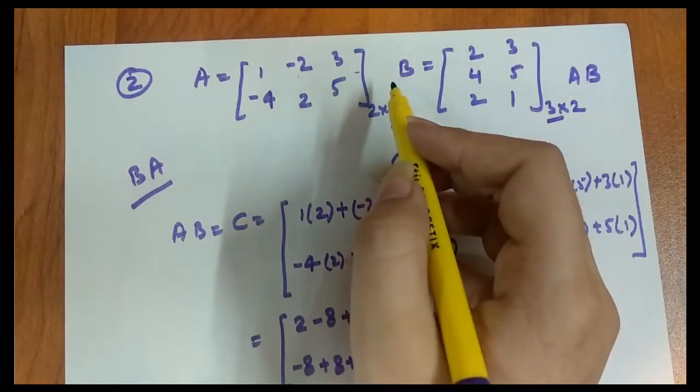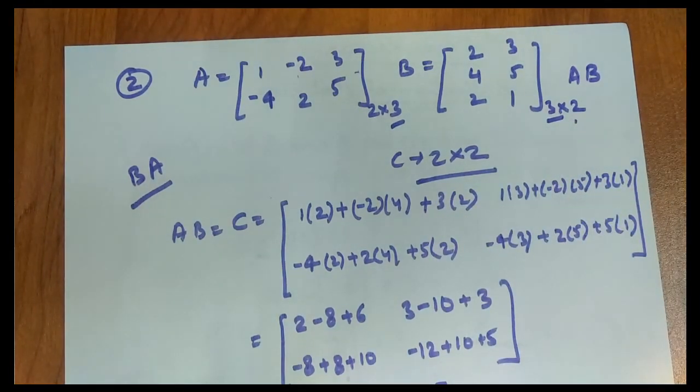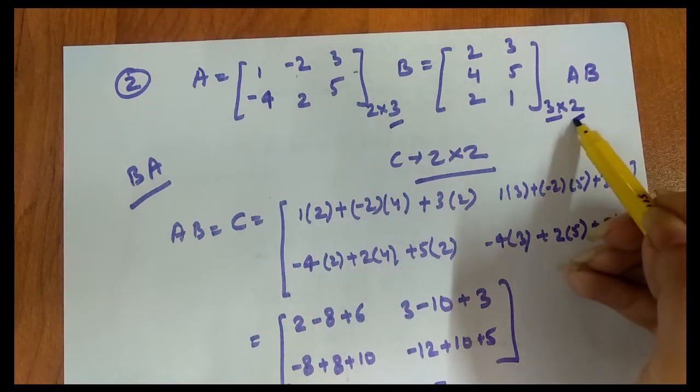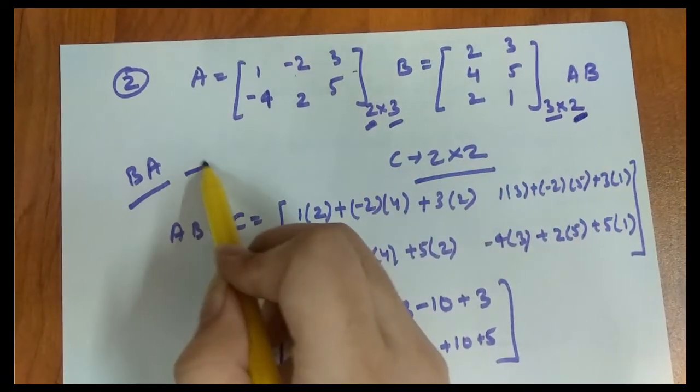So what is BA? BA is going to be calculated. Let's see. B is our first matrix now. First, A was the first matrix. Now B matrix is going to be first. So this first column is equal. Now BA matrix order is 3 cross 3.